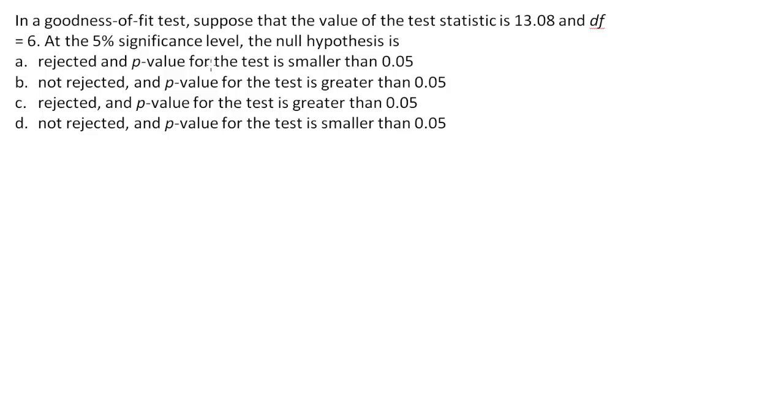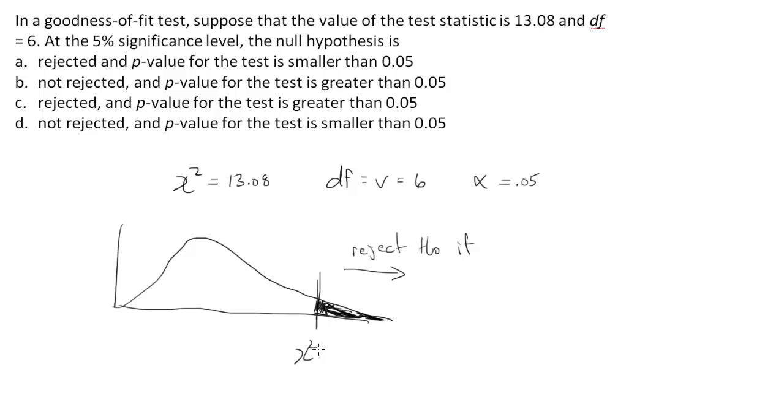In a goodness of fit test, suppose that the value of the test statistic is 13.08, so we're saying that chi-squared equals 13.08, and the degrees of freedom, which I typically write like this, are equal to 6, and we want a 5% significance level. So the null hypothesis is either A rejected or B is not rejected, so we're going to have to have a look at the rejection region. And with chi-squared tests in Chapter 15, we are always dealing with an upper tail test. So we will reject the null hypothesis if we are past this value.